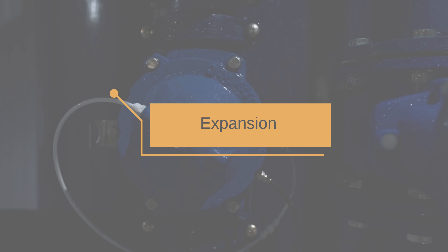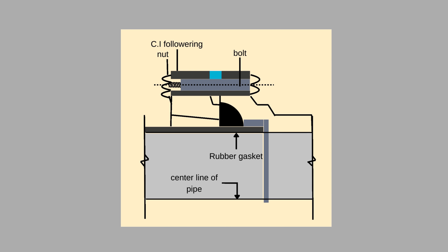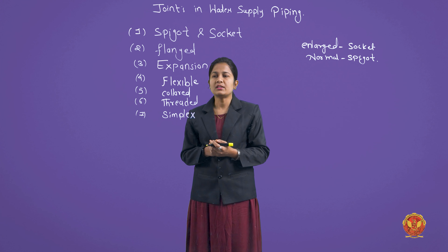The third joint is the expansion joint. As the name suggests, when there is a probability of expansion in the pipe, we provide an expansion joint. Expansion can occur because weather continuously changes — sometimes thermal stresses are produced. For example, if there is extreme heat, thermal stress is induced in the material and there is probability that the pipe will expand. So at the joints where the pipe is to be made, we also provide an expansion joint, so that if thermal stresses occur in future, they do not damage the pipe. These expansion joints are usually made in cast iron pipes. One end is the socket end, which is cast with a flange, and the spigot end is plain.